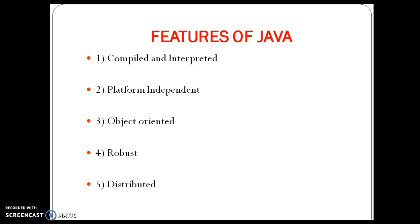The fourth feature is robust, meaning secured and reliable. Java is a robust language because memory is implicitly managed. In C++ or C, we need to use malloc and calloc to manage memory allocation and de-allocation. But in Java, we have an inbuilt memory management system called garbage collection, which de-allocates memory for objects that are no longer referenced in the program.